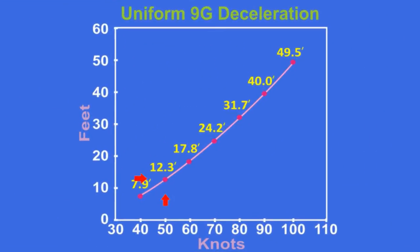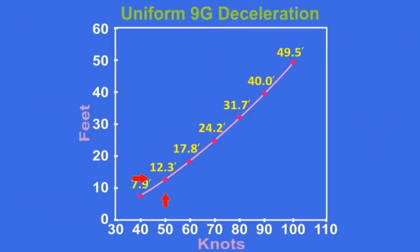For instance, with a ground speed of 50 knots, you need to slow down in no less than 12.3 feet — that's no less than 12.3 feet to keep the cockpit intact. Now keep in mind that uniform deceleration means the airplane's speed decreases proportionately throughout the entire distance, not all at once near the end of 12.3 feet, which is always what seems to happen to Wile E. Coyote in every Roadrunner cartoon.